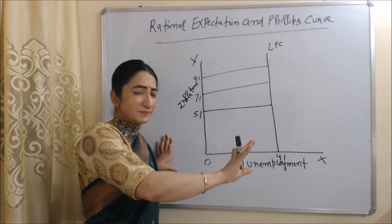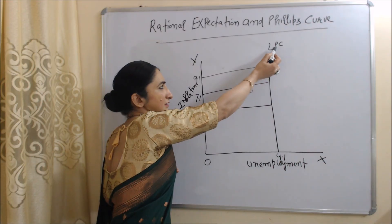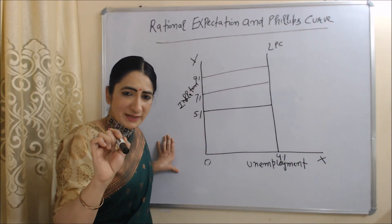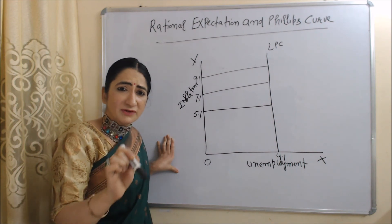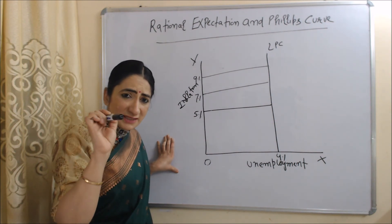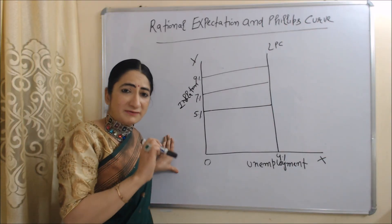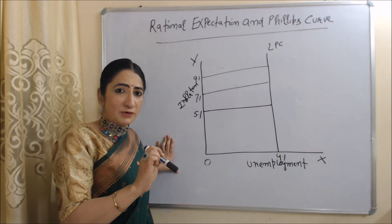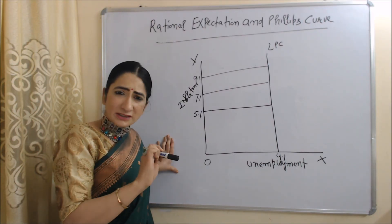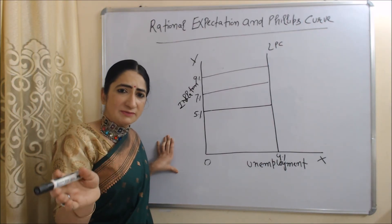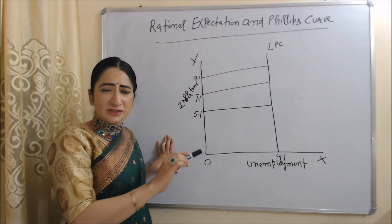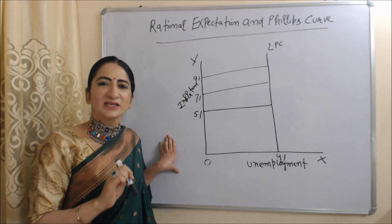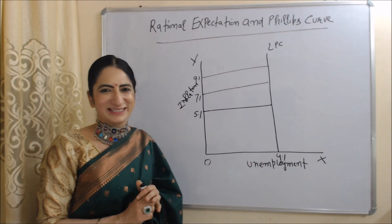Again if inflation increases, employees again immediately predict their real wage rate will fall, demand higher wages, profit falls, production does not increase, and unemployment remains the same. So according to rational expectation, there is no relation between inflation and unemployment in either the short run or the long run. But according to adaptive expectation, there is some relationship in the short time period, but not in the long time period. This is all about adaptive and rational expectation and the Phillips curve. Thank you so much for watching. Bye bye, take care.